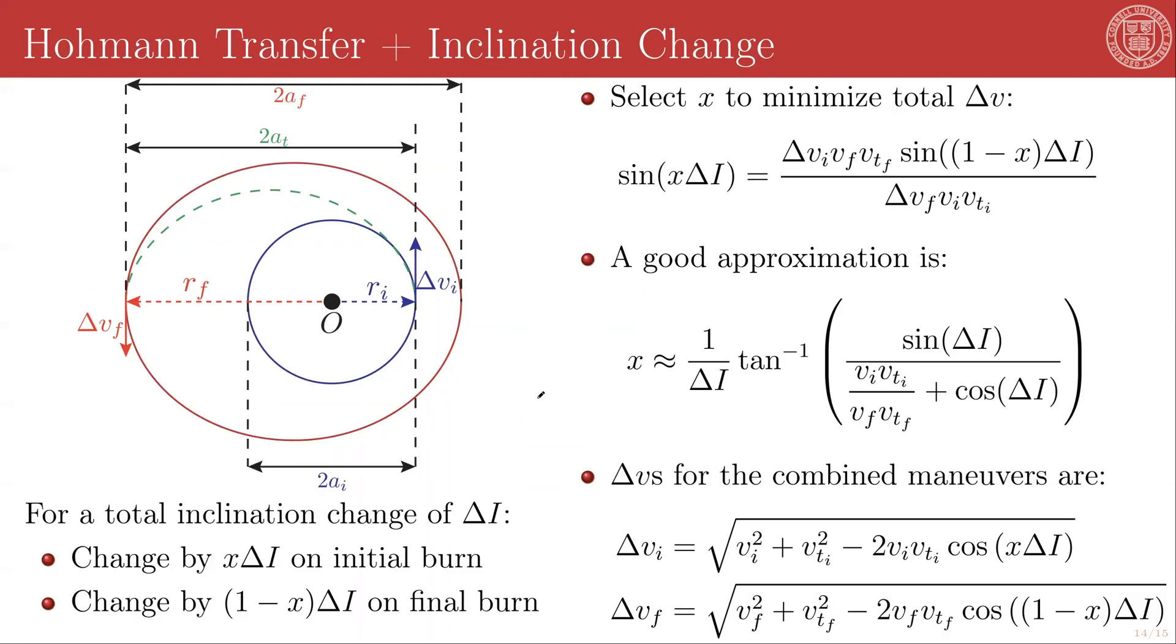And in the same vein of packaging maneuvers together, you can think about combining Hohmann transfers with inclination changes. So if the Hohmann transfer is the zeroth order model for an interplanetary transfer, for example, the Hohmann transfer plus inclination change is kind of like the first order model.